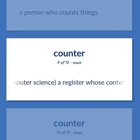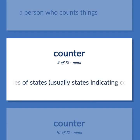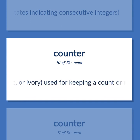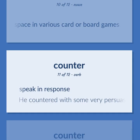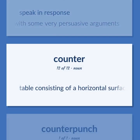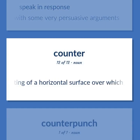Computer Science: A register whose contents go through a regular series of states, usually states indicating consecutive integers. Game Equipment: as a piece of wood, plastic, or ivory used for keeping a count or reserving a space in various card or board games. Speak in response — he countered with some very persuasive arguments. Table consisting of a horizontal surface over which business is transacted.